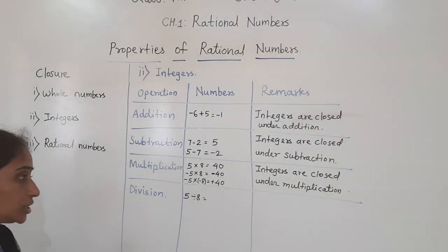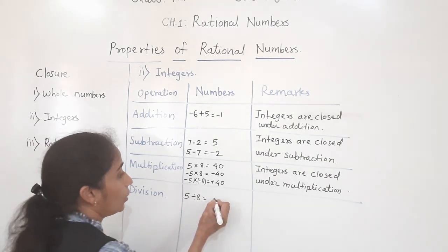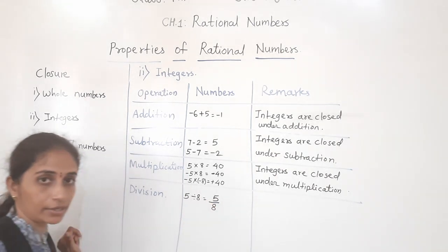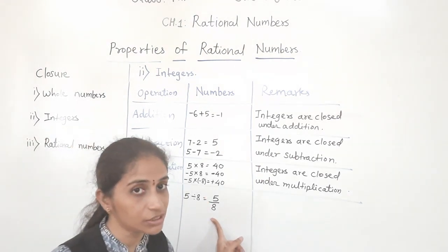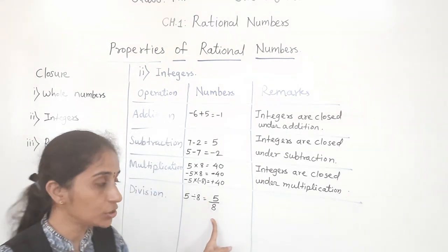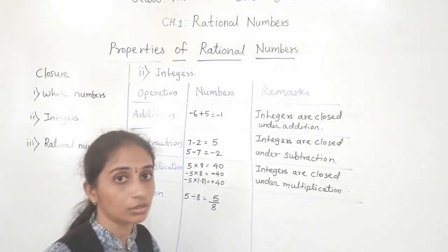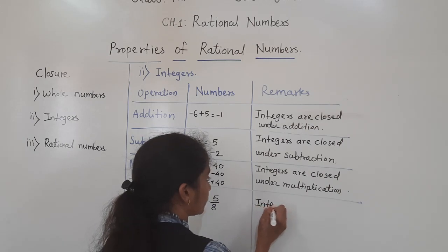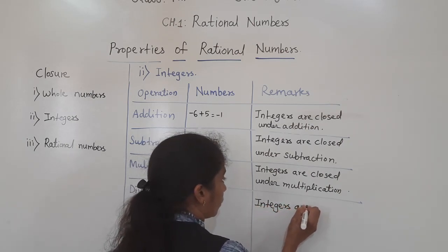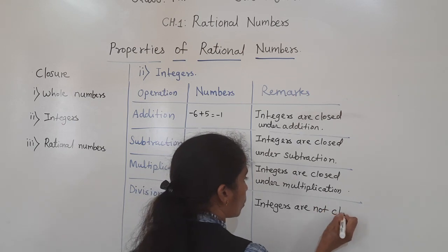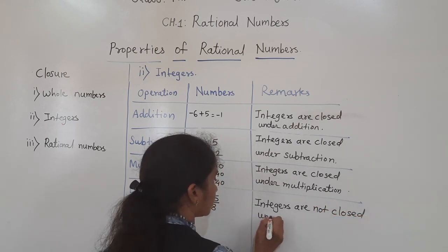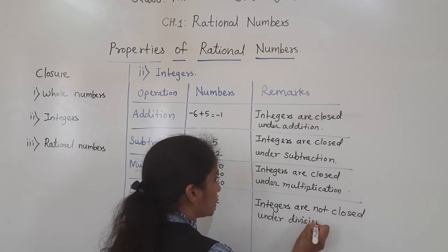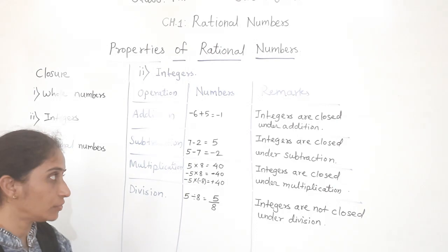Now for division: 5 divided by 8 equals 5 upon 8. Is 5 upon 8 an integer? No, it is not an integer. So integers are not closed under division.